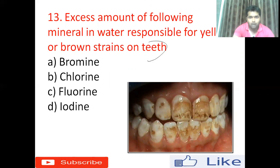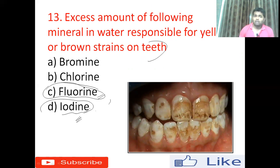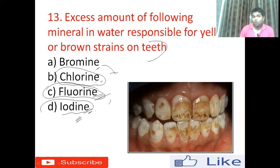Question thirteen: excess amount of which mineral in water is responsible for yellow or brown stains on teeth? Many people suffer this condition — it is not due to poor brushing but due to excess mineral in drinking water. That mineral is fluorine. Iodine deficiency causes goitre. Chlorine is used to purify drinking water and swimming pools. Bromine is not related here. The right answer is option B — fluorine or fluoride in excess in drinking water causes decay and browning or yellowing of teeth.